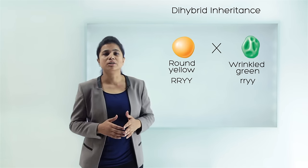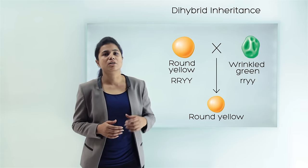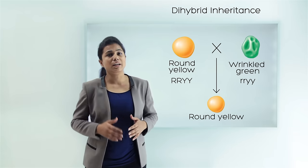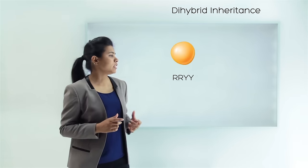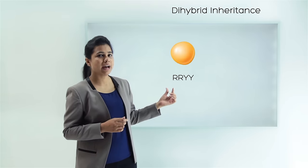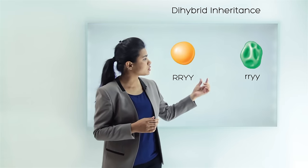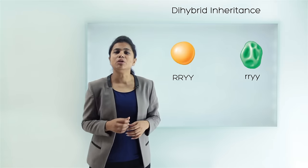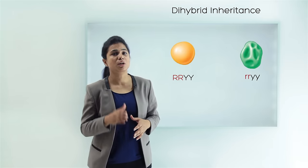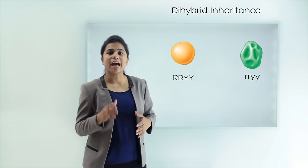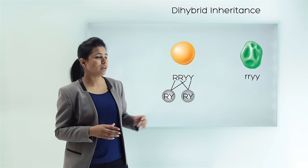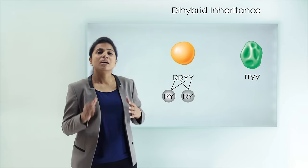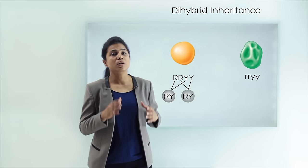When these two plants were crossed, Mendel observed that in the first generation only round and yellow seeds were obtained — no wrinkled green seeds were obtained in the F1 generation. We will use the Punnett square to understand how Mendel got this observation. We know the genotypes of both plants. The gametes formed from the RRYY plant will each have capital R and capital Y, so only two identical gametes (RY) are formed.